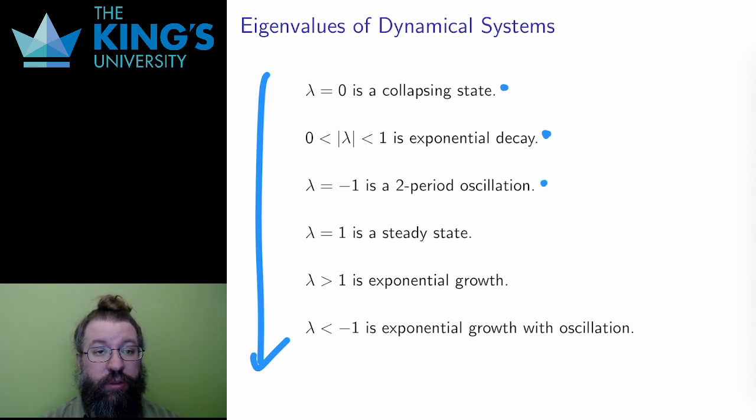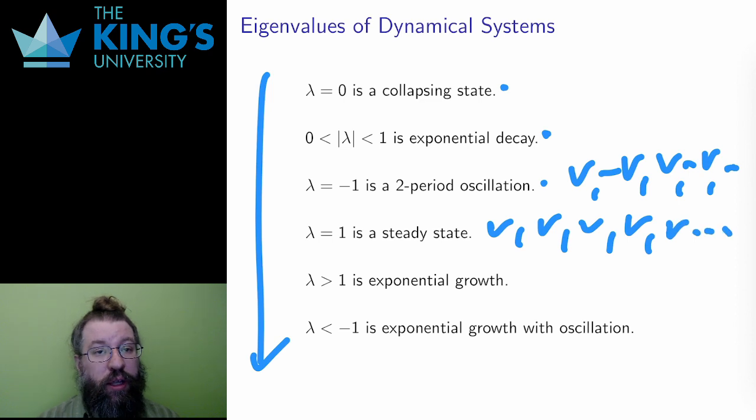If lambda is equal to negative one, then there is a two-period oscillating state. The sequence begins with a state and jumps back and forth between v and negative v. If lambda is exactly one, then there is a steady state. The sequence never changes. These steady states are very often important in modeling.